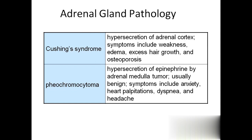Pheochromocytoma is caused by excessive secretion of epinephrine by an adrenal medulla tumor. The person will be having anxiety, heart palpitations - meaning you can feel your own heartbeat, like after running for 20 minutes - dyspnea, which means abnormal breathing, and headache. All these together are seen in pheochromocytoma because of excessive secretion of epinephrine.